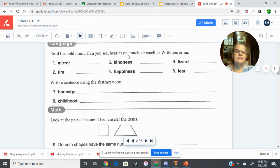Fear. Can you see it, hear it, taste it, touch it, or smell it? Yes or no. Then we're going to write a sentence using the abstract nouns that we have right here. Number seven, honesty. Write a complete sentence including the word honesty. Number eight, childhood. Write a complete sentence including the word childhood in your sentence.